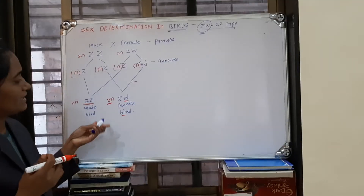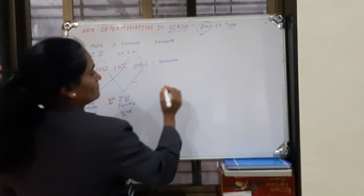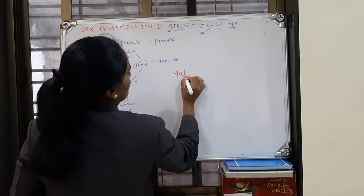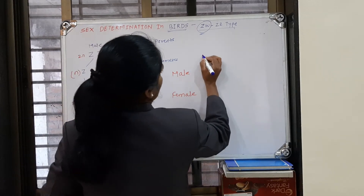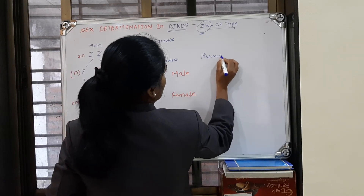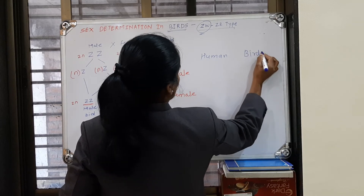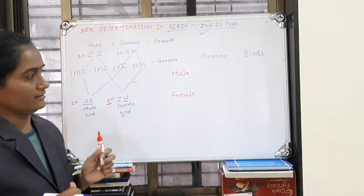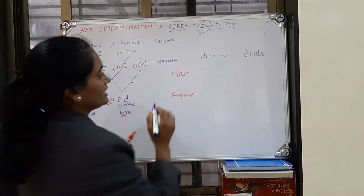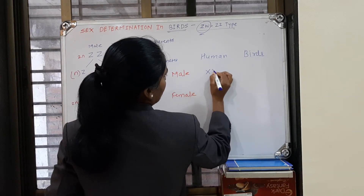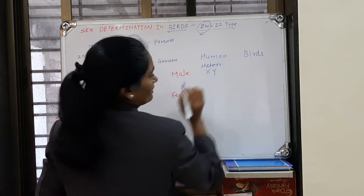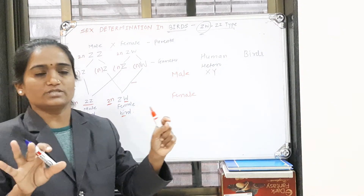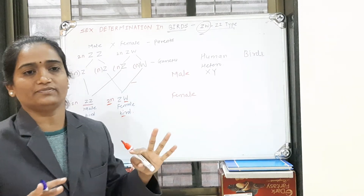What is the difference between human sex chromosomes and bird sex chromosomes? In humans, the male has XY — two different sex chromosomes — making the male heterogametic. The female has XX — both chromosomes the same — making the human female homogametic.